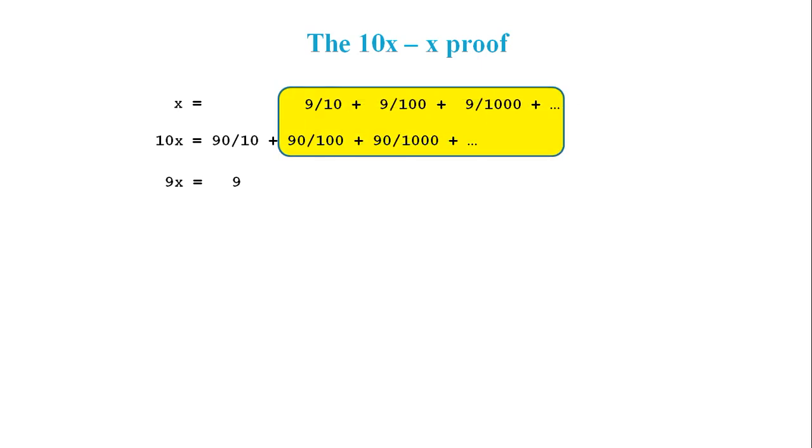And the same can be said for all subsequent terms. They will all cancel out completely. So there's nothing more to include on the next line, leaving this 9x equals 9 as a result of our subtraction.